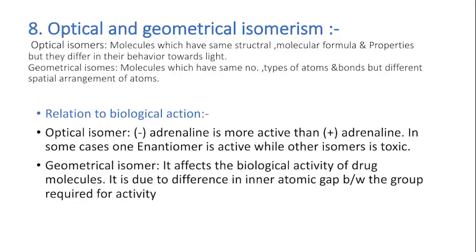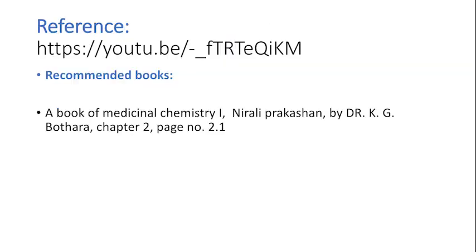The eighth property is optical and geometrical isomerism. Optical isomers are molecules which have the same structural molecular formula and properties but differ in their behavior towards light. Geometrical isomers are molecules which have the same number and types of atoms and bonds but differ in the spatial arrangement of atoms. Relation to Biological Action: Levo-adrenaline is more active than dextro-adrenaline. In some cases, one enantiomer is active while the other isomer is toxic. Geometrical isomerism affects the biological activity of drug molecules due to differences in interatomic spacing between groups required for activity.